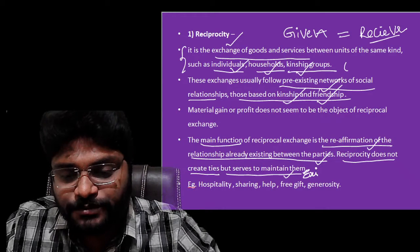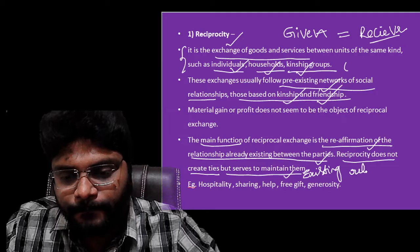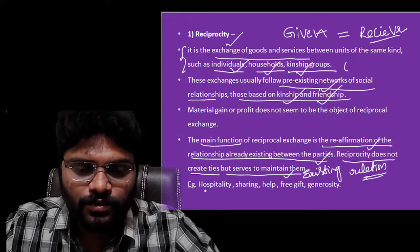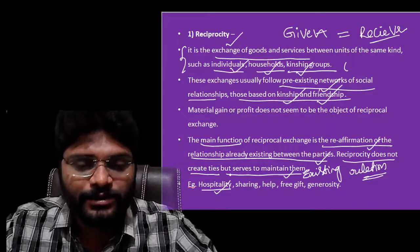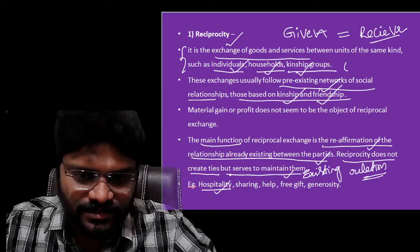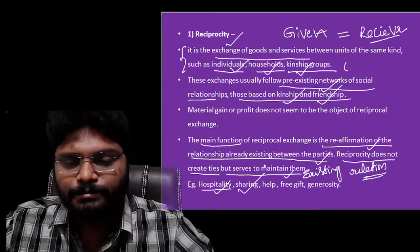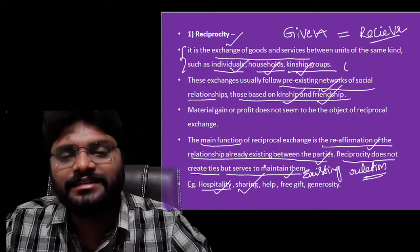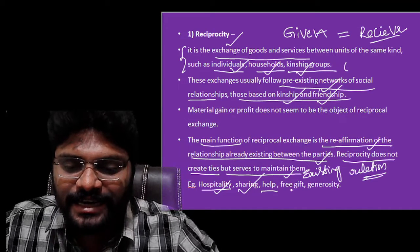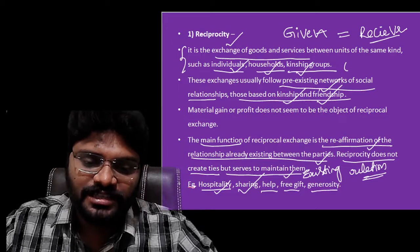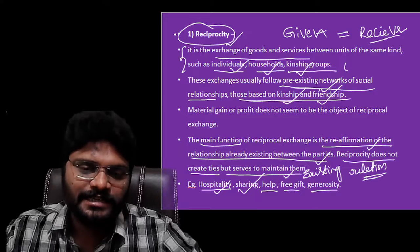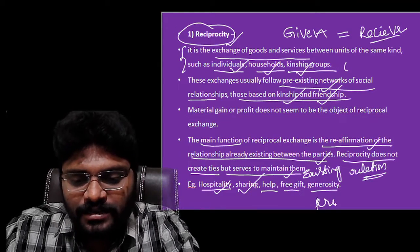General examples of reciprocity include hospitality — when relatives come to our home, we serve them with material things. Sharing of meat is another example: when a kinsman hunts, he distributes the meat to his kinsmen, and whenever that kinsman gets a hunt he distributes it back to the first party. Help, free gifts, and generosity are all examples under the reciprocity concept — without any profit and loss consideration.